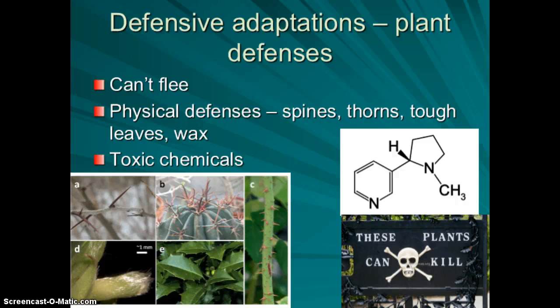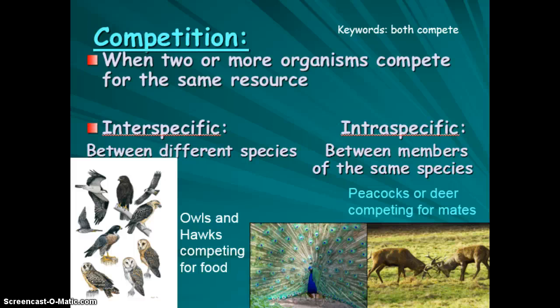Organisms should not overlap in their niche, because if they do, they'll compete for the same resources — that's called competition. There are two types: interspecific competition, which is between different species (like owls and hawks competing for food, resolved by owls being active at night and hawks during the day), and intraspecific competition, which is within the same species.